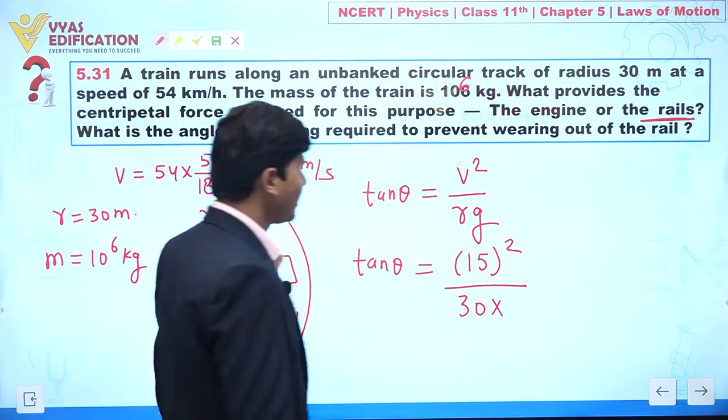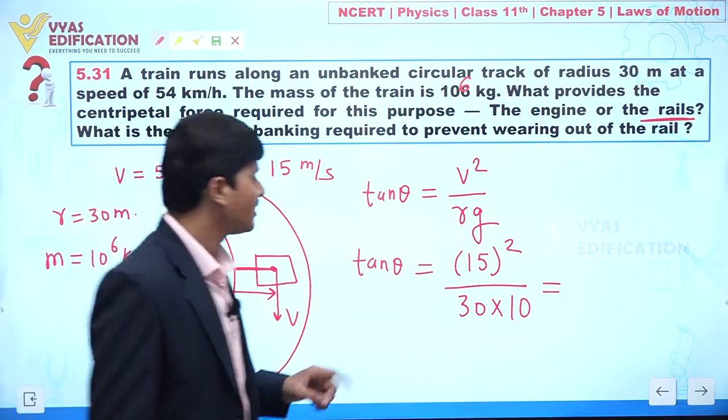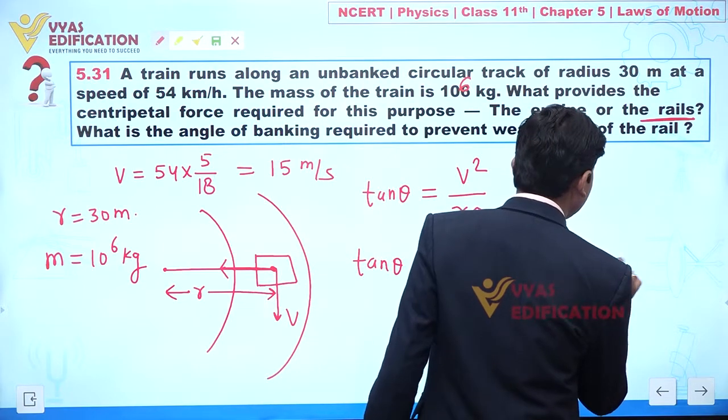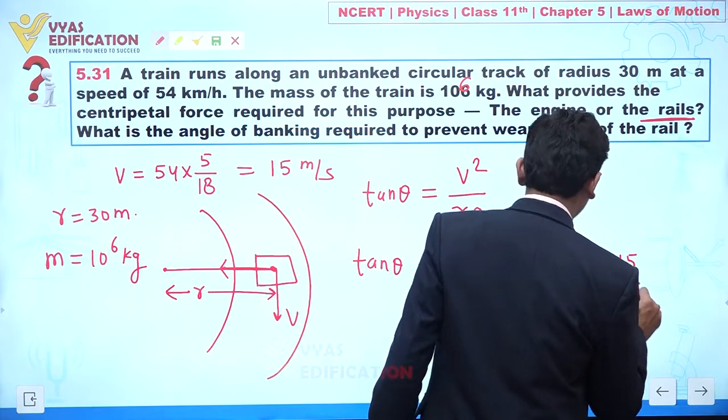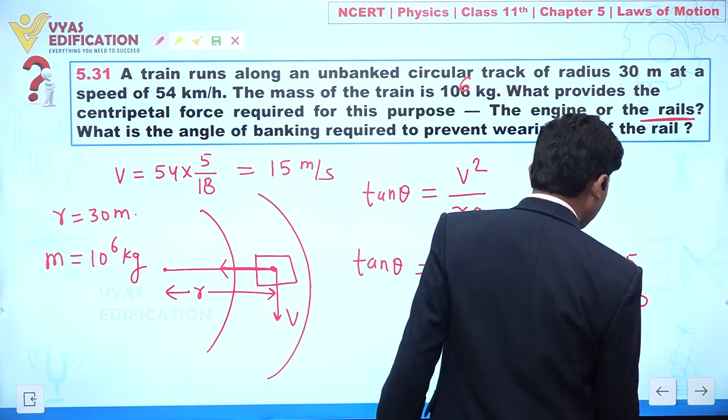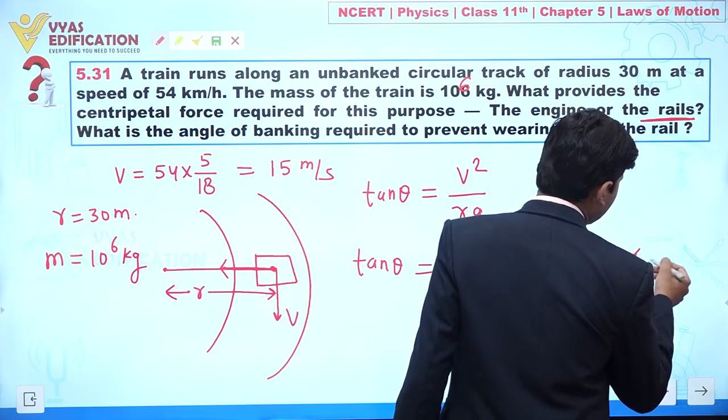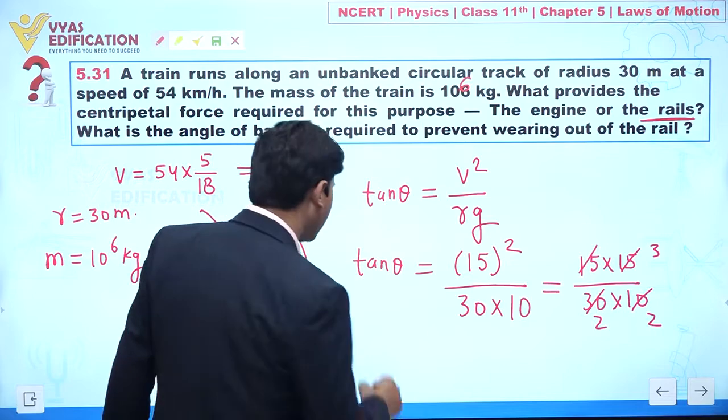From here we can see we can write like this: 15 multiplied by 15 divided by 30 multiplied by 10. Now we can see this one is 2, we can say this is 3 and this one is 2.